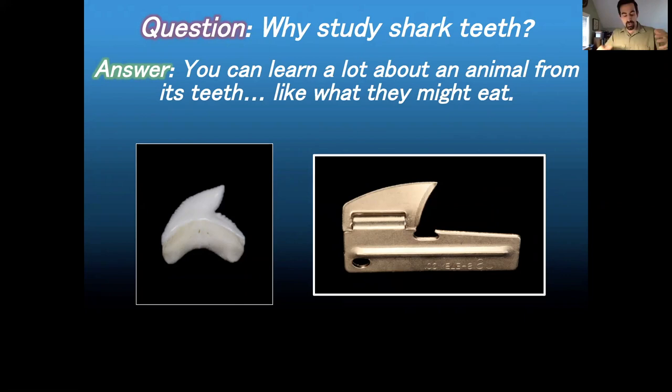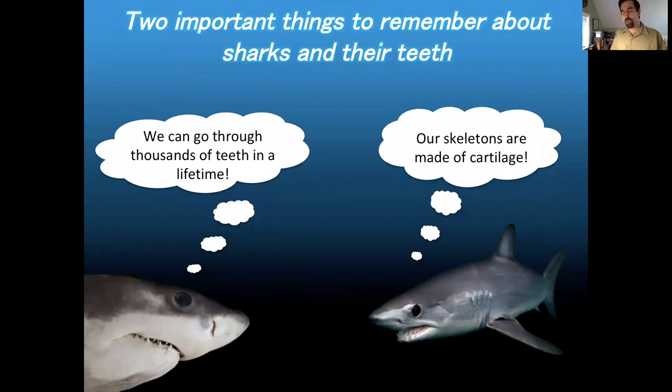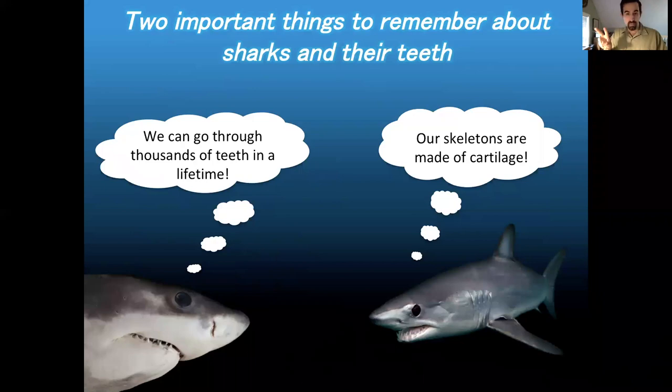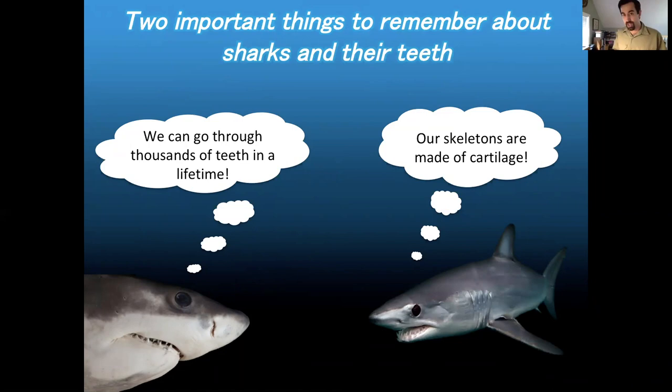Now that I've given you an idea of why I'm interested in shark teeth, I want you to remember two things. The first is that sharks can go through thousands of teeth in a lifetime. We get two sets of teeth — baby teeth and adult teeth — and after that second set we don't get any more. But that's not a problem for sharks. Sharks just get one generation of teeth after another, after another.